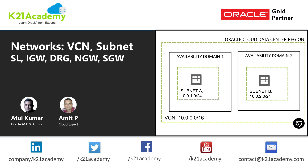Hey there, welcome to this third module on Oracle Cloud Infrastructure and Networking. In this module we are going to talk about everything related to networking, right from VCN, subnet, security list, different types of gateways like internet gateway, dynamic routing gateway, NAT gateway, and service gateway. We'll also cover a customer case study where you will actually deploy a network on OCI for a real-life case study. So you are in for a treat.